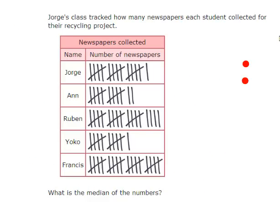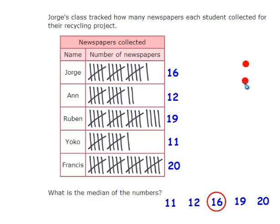Joe's class tracked how many newspapers each student collected for their recycling project. What is the median of the numbers? First let's find out how many Jorge, Ann, Ruben, and Yoko have collected, and write that number at the side. Remember to find the median, you put the numbers in order from least to greatest, and the median is the number in the middle. If there's only one number in the middle, that's it. If there are 2, you add those two numbers together and divide by 2.